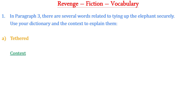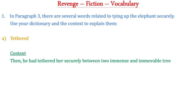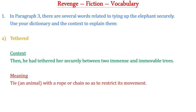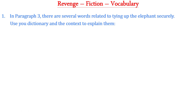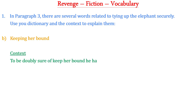The first word is 'tethered'. The context in which this word was used in the story is: 'Then he had tethered her securely between two immense and immovable trees.' The meaning of this word is: to tie an animal with a rope or chain so as to restrict its movement.